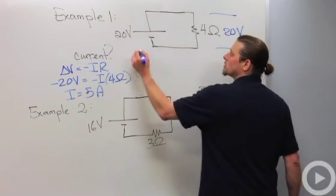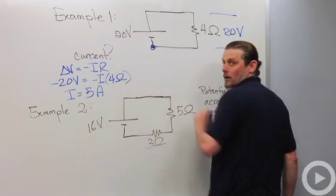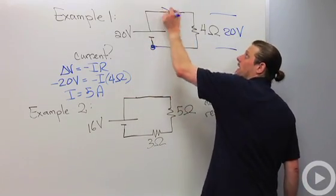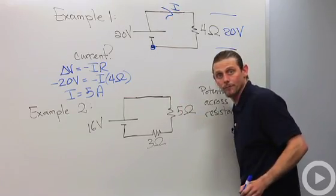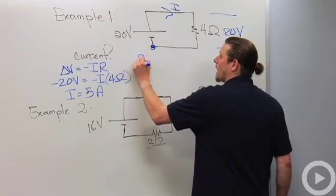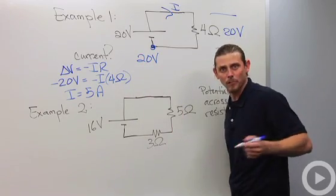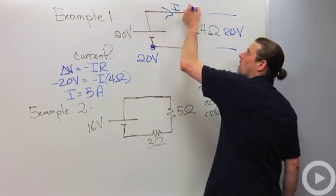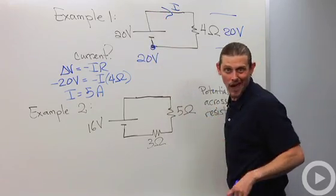So we'll start off and we'll start right here and we're just going to go around the circuit in the direction of the current. So go across the battery. What's the potential difference? Well, I picked up 20 volts. So I got plus 20. Go across the wire here. Nothing happens.